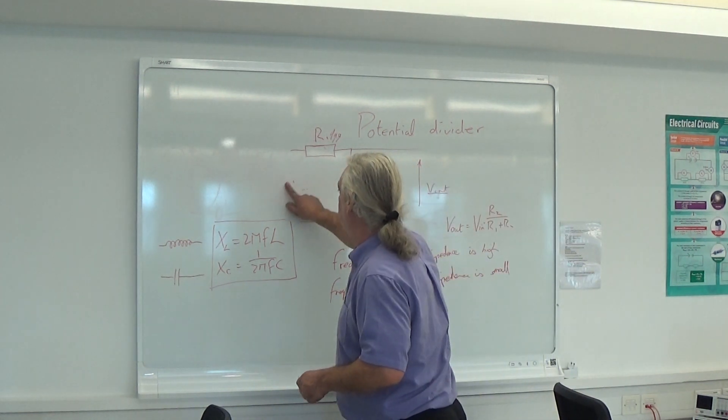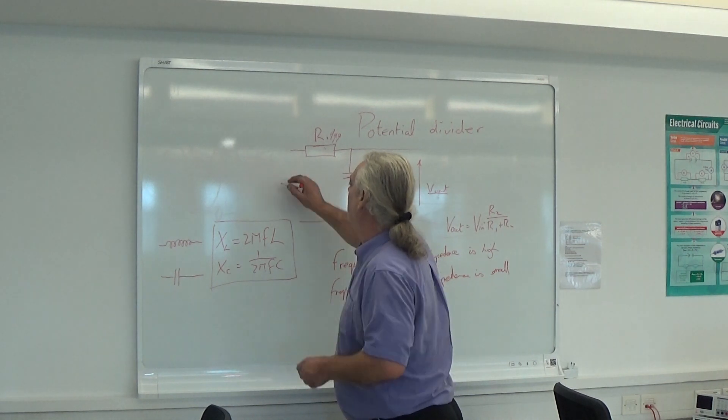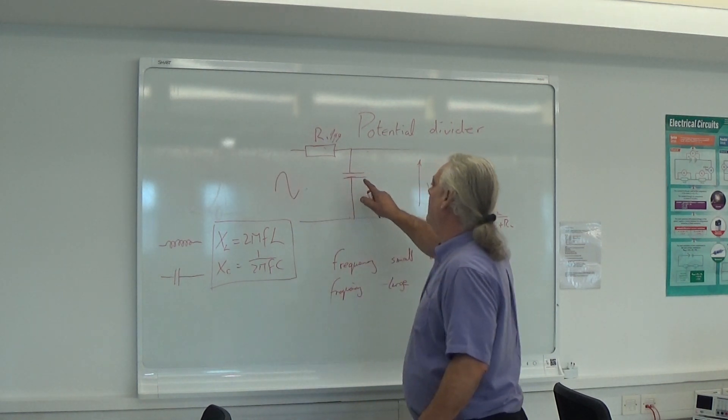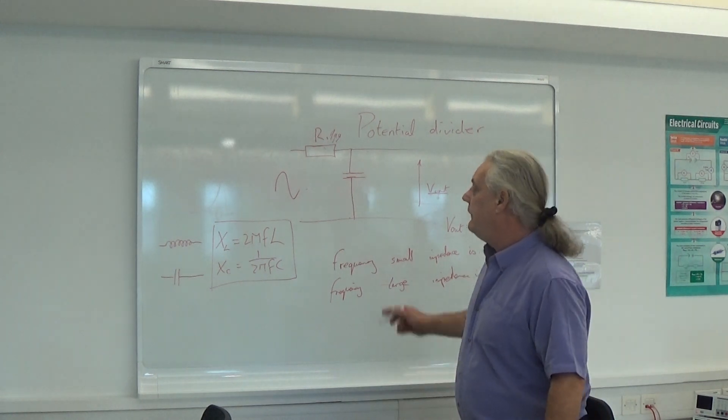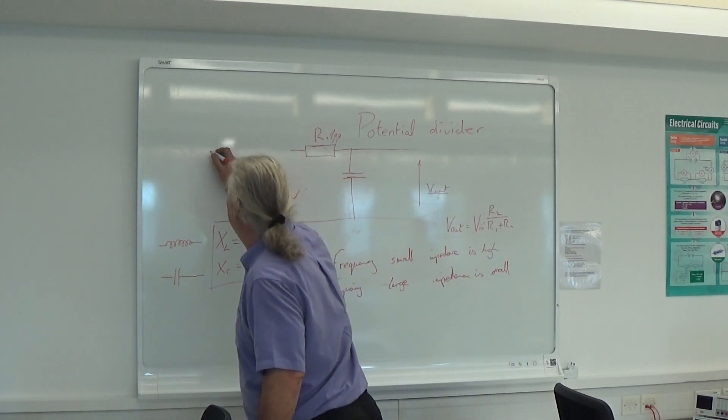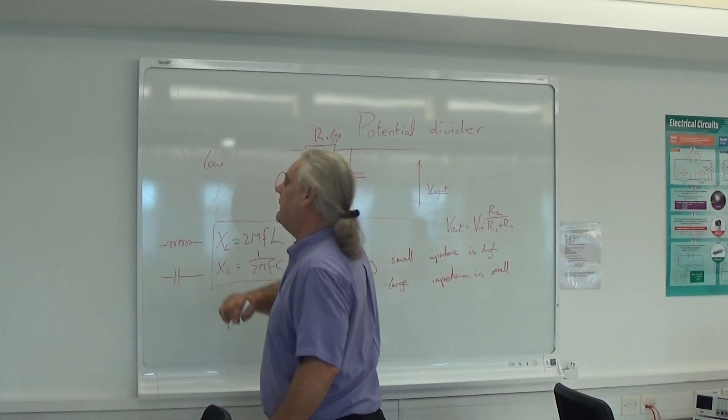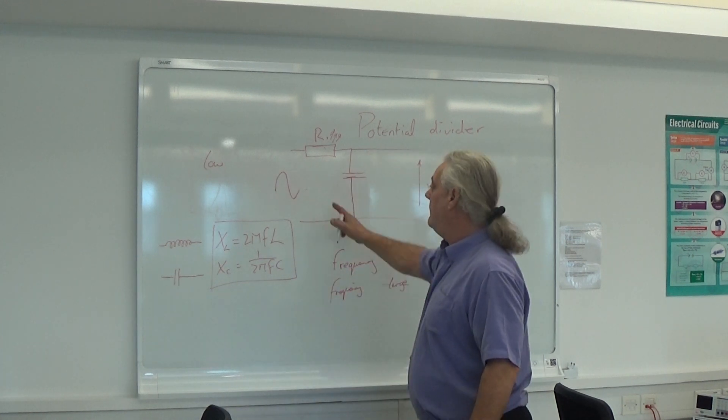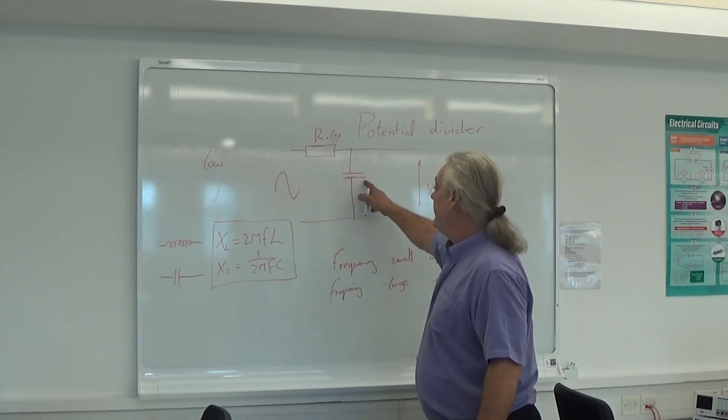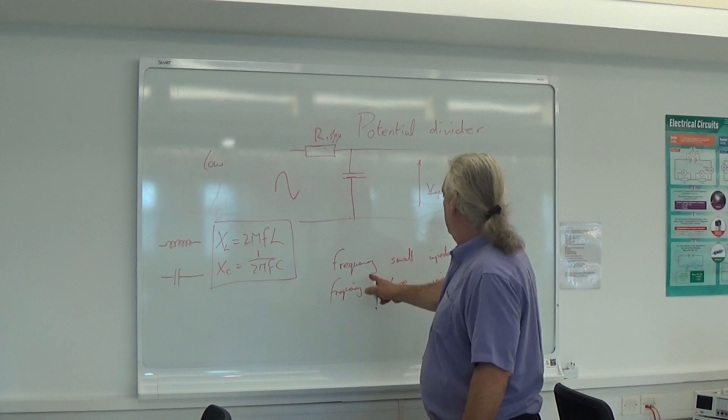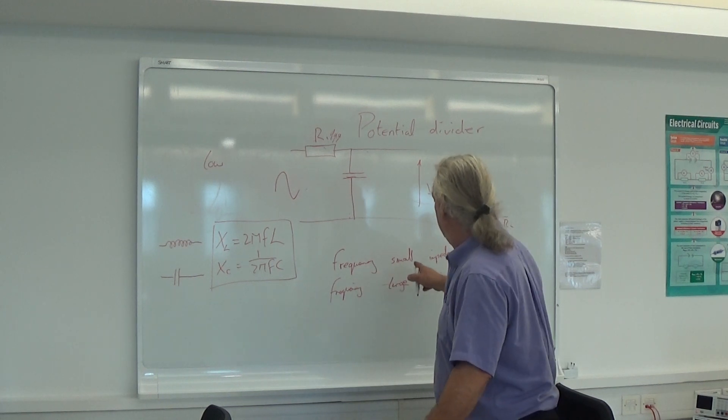So let's apply this to, this is an AC signal by the way here. Let's apply this to our circuit. So let's take the example, we're going to put in low frequency. That's our input. Well what happens? We know that at low frequency, so frequency is small, impedance is high.